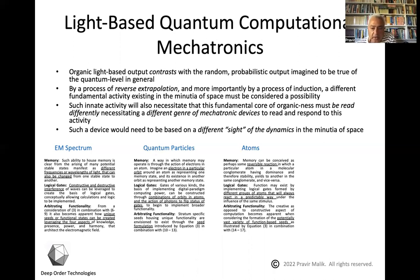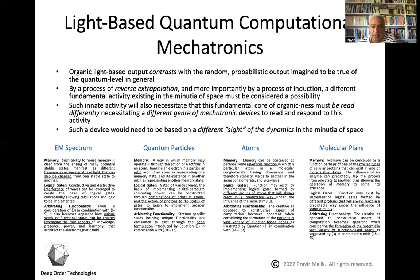When we think about atoms, memory can be a function of the reversible reaction in a molecular conglomerate of atoms. Logical gates can be thought of as groups of atoms that will always react in a predictable way. And going back to the light-based matrix, there's a large amount of functionality that becomes possible, apparent also by the increasing number of atoms. When we think about molecular plans, memory can be created through particular kinds of proteins that exist in one or more stable states. Logical gates involve these proteins changing their state in a predictable way due to some kind of stimulus. And the arbitrating functionality, again, is derived from the light-based matrix.